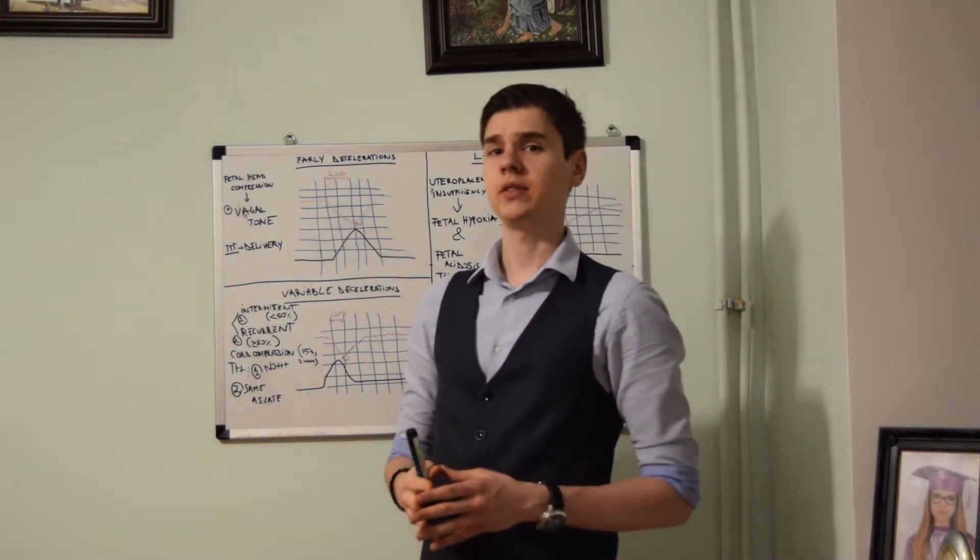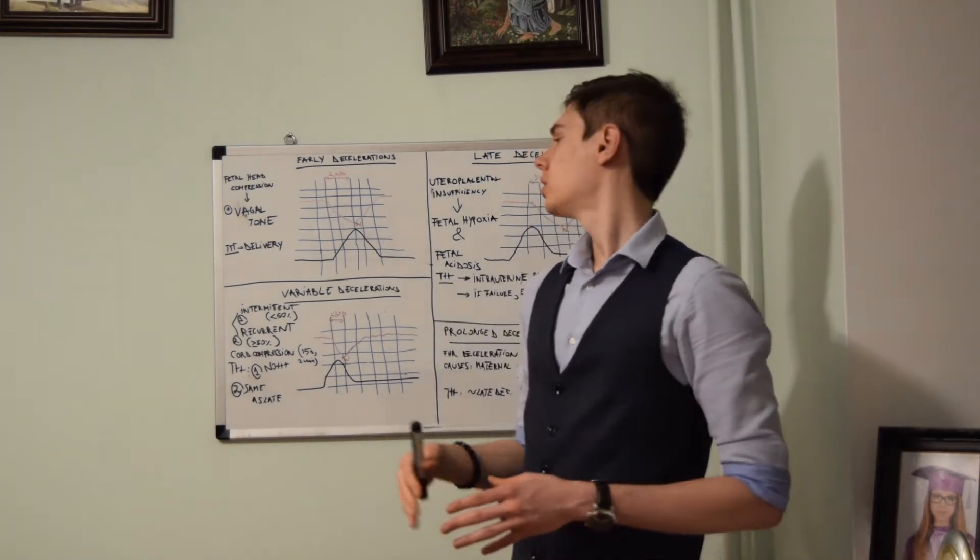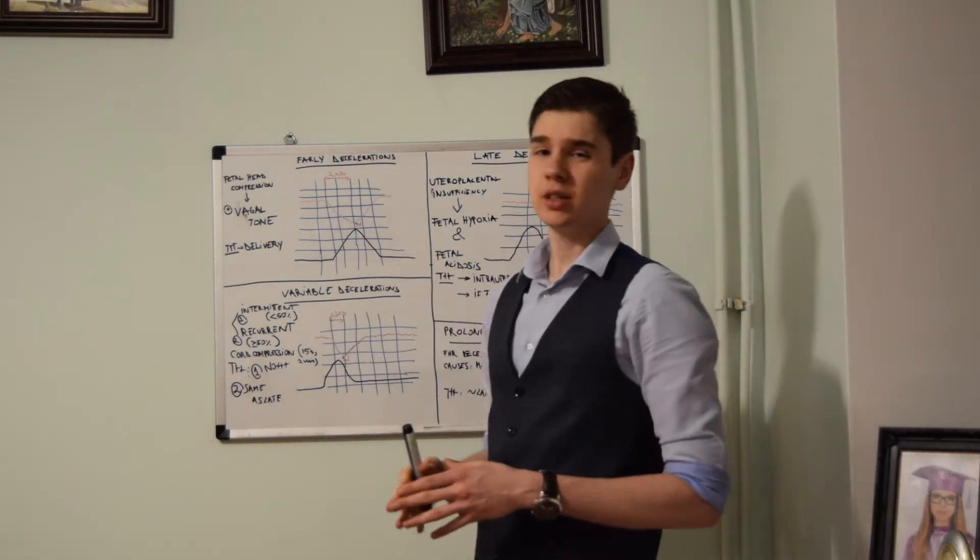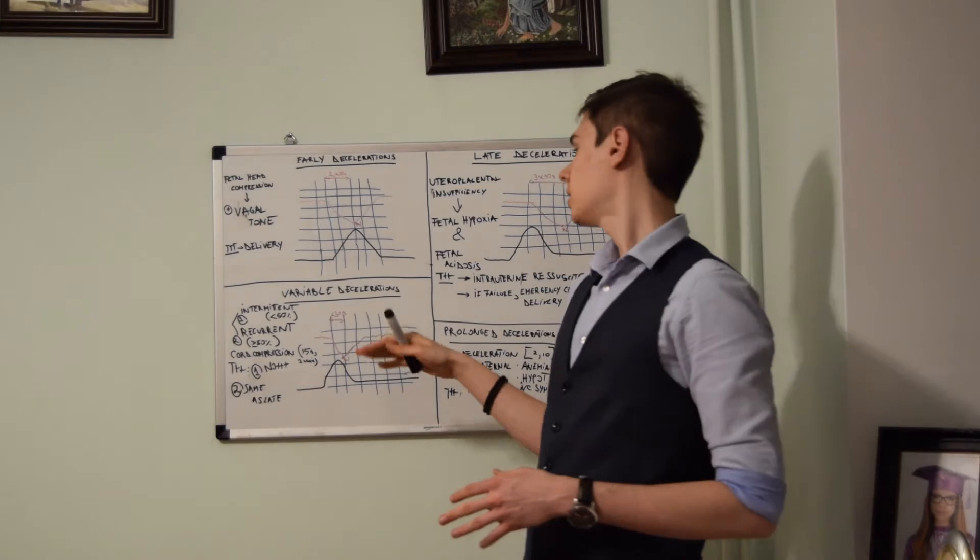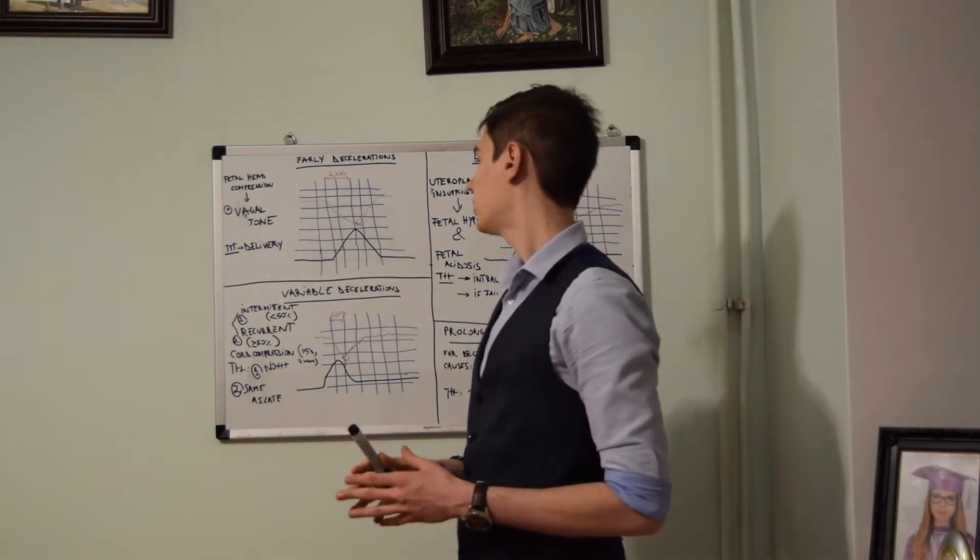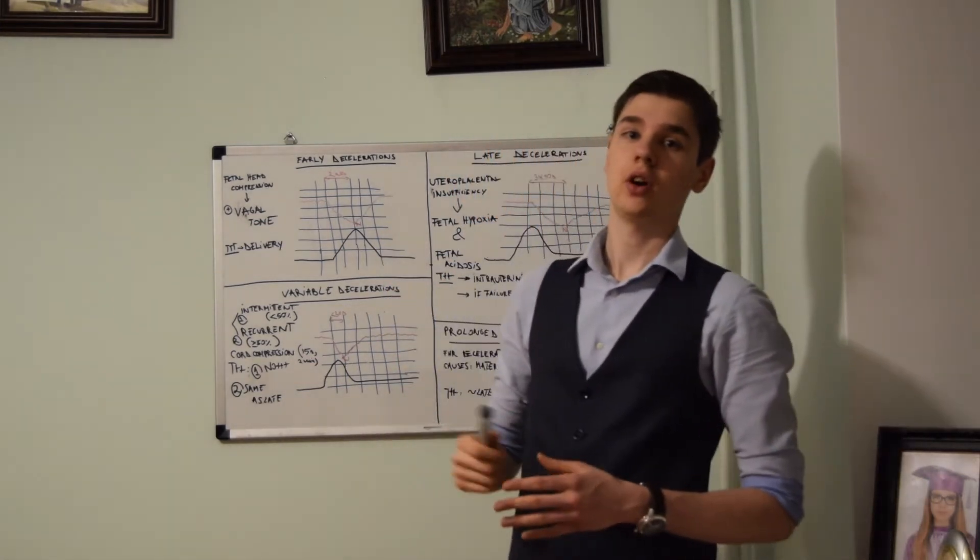On the fetal heart rate tracing you will see that the nadir, which is the minimum point, is reached gradually. This means that it takes more than 30 seconds to reach it. In the case of early decelerations, the end of the contraction marks the end of the decrease in the fetal heart rate.